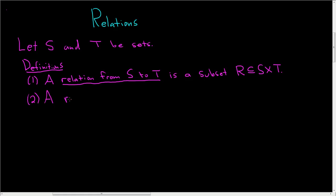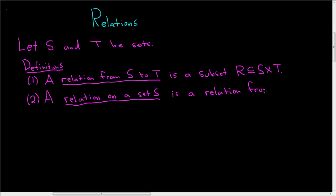A relation on a set S is a relation from S to S. So it's a subset, which we'll again call R, of the Cartesian product S times S. It's just a subset of this particular Cartesian product.